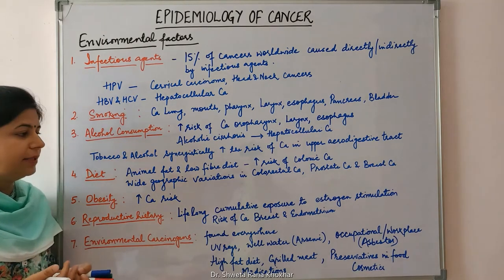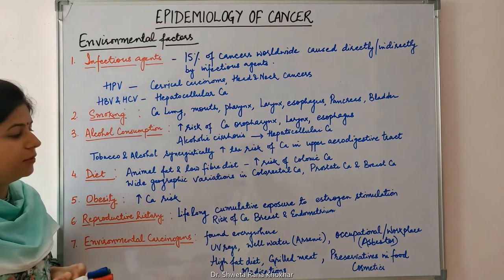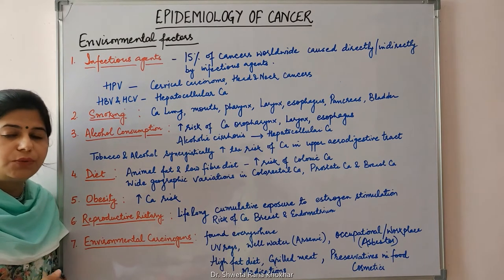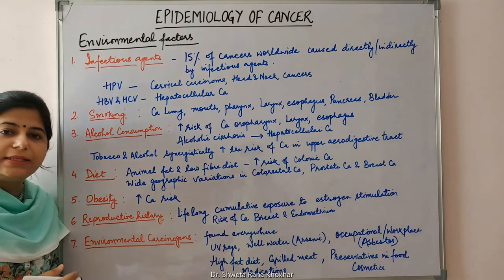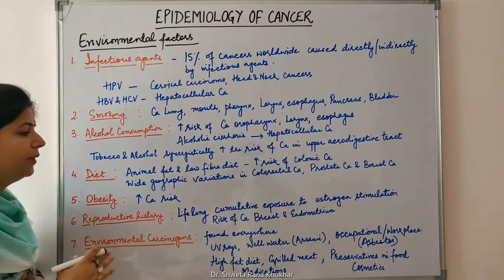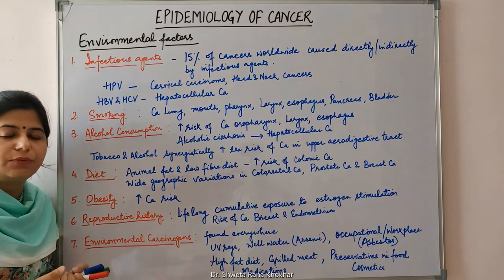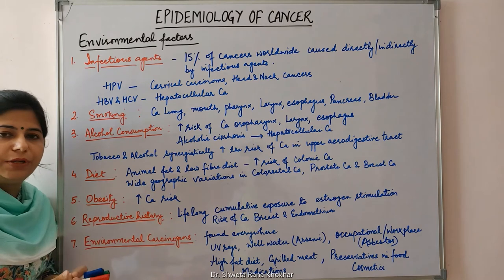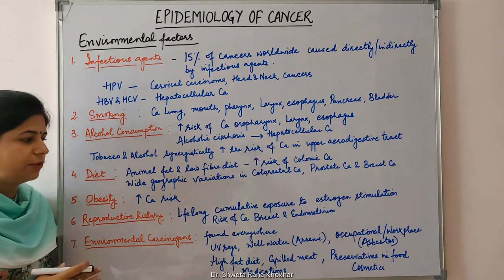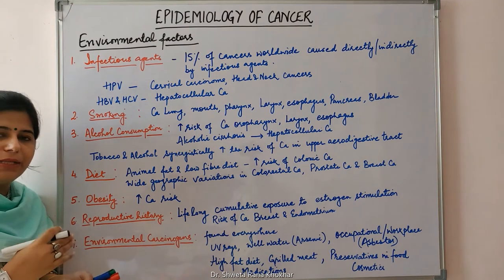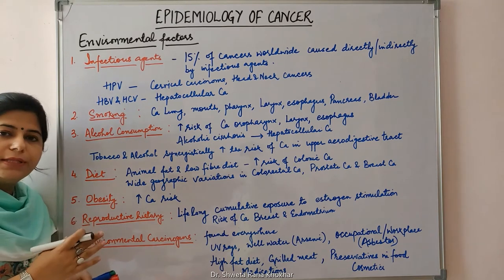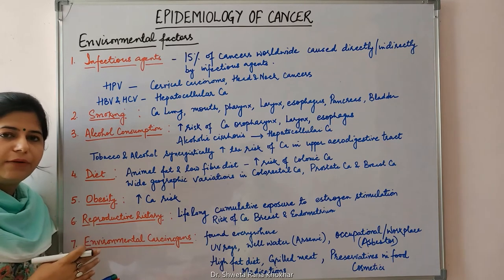Diet that is rich in animal fat and poor in fiber increases the risk of colonic carcinoma. Wide geographic variation in colorectal carcinoma, prostate carcinoma, and breast carcinoma can be due to variation in diet. Obesity increases carcinoma risk. Regarding reproductive history, lifelong cumulative exposure to estrogen stimulation — early menarche and late menopause — increases the risk of carcinoma breast and endometrium, particularly if unopposed by progesterone. Wide geographic variation in carcinoma breast incidence can be due to cultural differences influencing the timing and number of pregnancies.